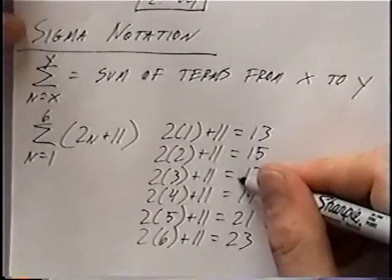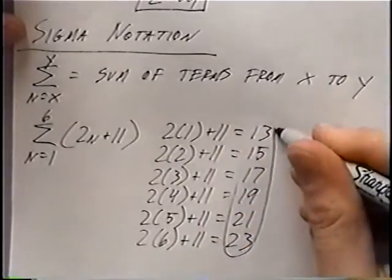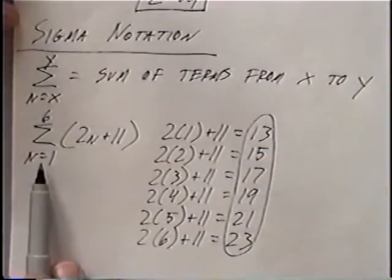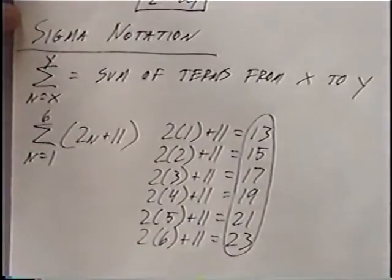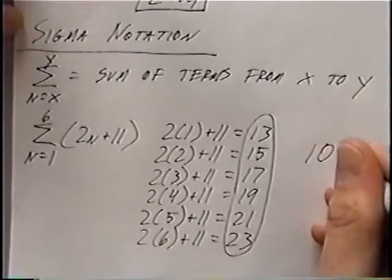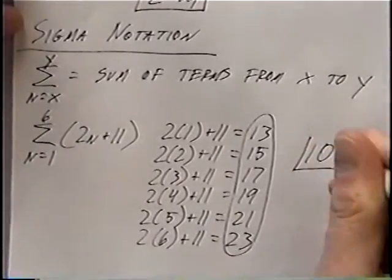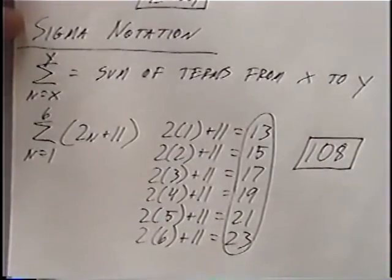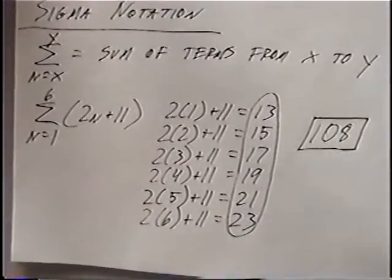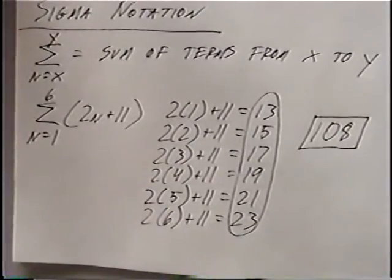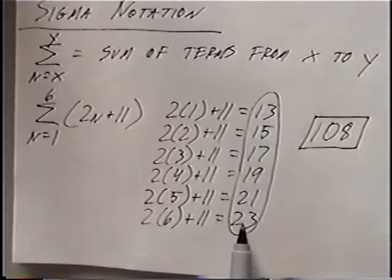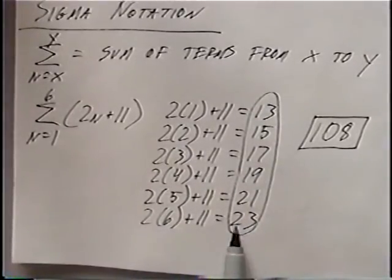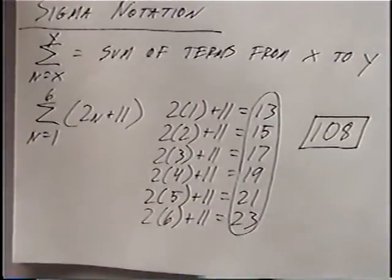Adding all these numbers together gives the answer to the sigma notation. Summing the values from n equals 1 to 6 using the formula 2n plus 11, the total is 108. An alternative method would be to find the first term and last term and then use one of the summation formulas with a sub 1 and a sub n.